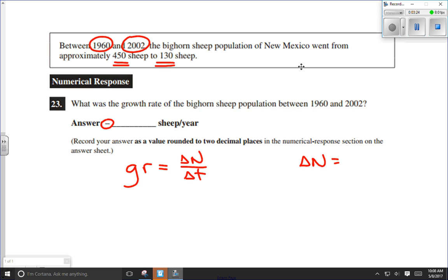That's our change in population size, so we're going to take the final population, 130 sheep, and subtract the initial population, 450 sheep, and we get negative 320 sheep. So it's gone down by 320 sheep over that time frame.